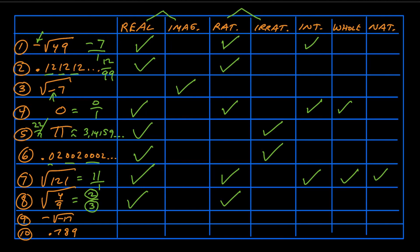For number nine, the square root of negative 17 — you can see there's a negative underneath the square root. When you try to take the square root of a negative number, we call that an imaginary number. That's the only category that one falls into.